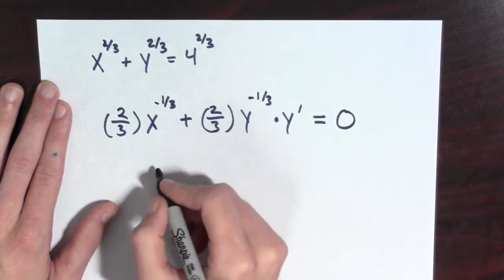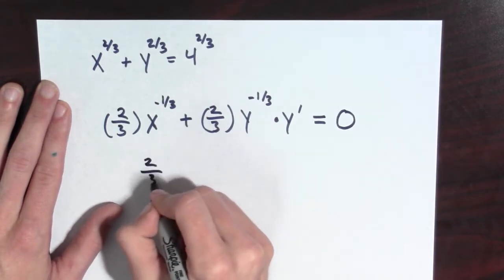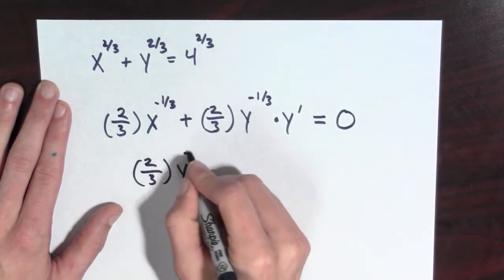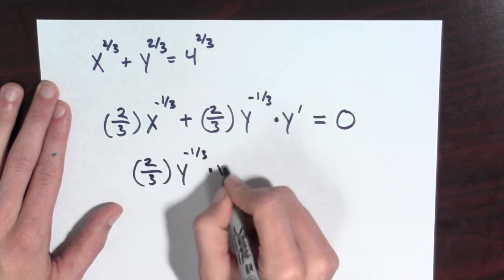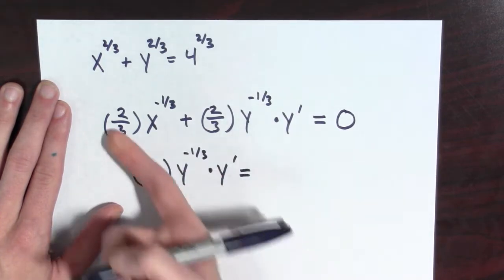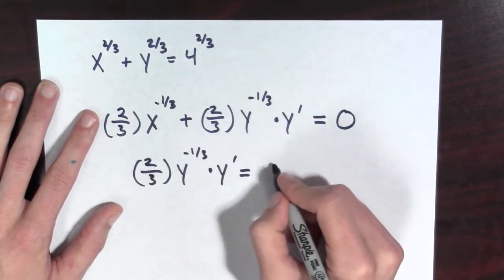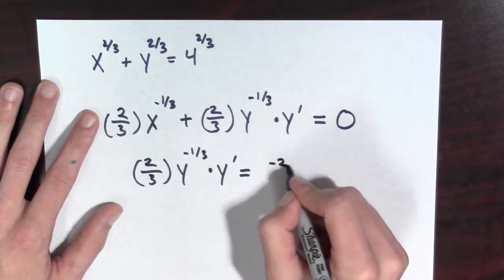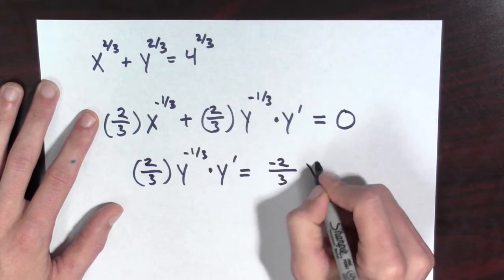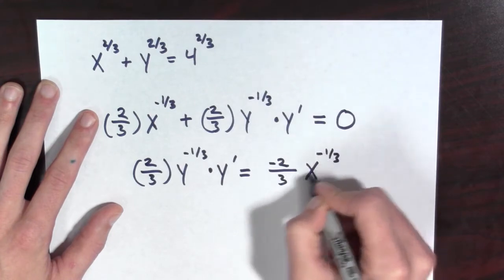Alright, so now I have (2/3)y^(-1/3) · y' equals—I can subtract this term from both sides—and I have -(2/3)x^(-1/3) here.